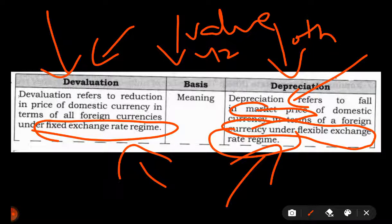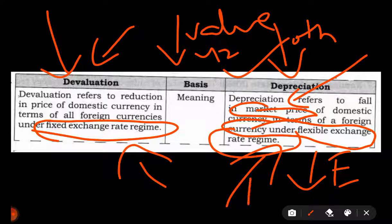Depreciation is when the currency falls in value automatically. This happens, for example, if a country has lower exports and higher imports, which means the demand for the local currency is higher while the supply of the local currency is lower.